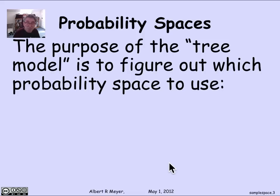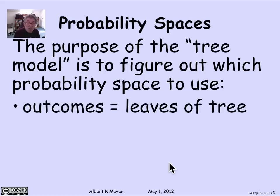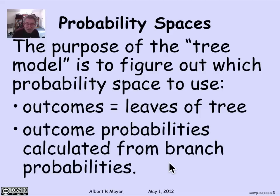Up until that point, it's the modeling part, which is very important, but you can't say the model is right or wrong. It's a model, and its rightness or wrongness is a matter of judgment and comparison to how it stacks up against reality. When using the tree model, it's the leaves of the tree that correspond to the outcomes, and the outcome probabilities are obtained by reasoning about the probabilities assigned to each branch as you work from root to leaf.